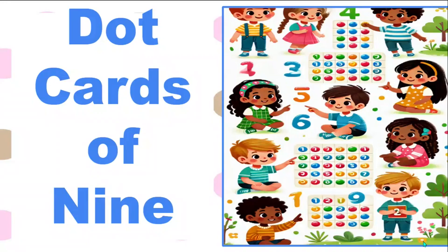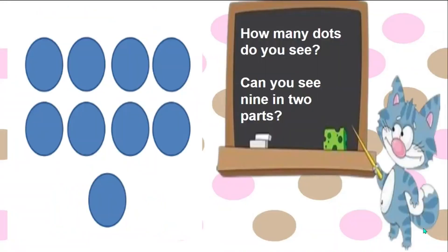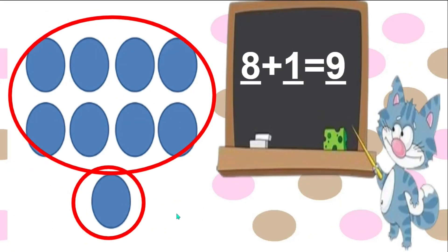This fluency is called Dot Cards of 9. How many dots do you see on my dot card? Can you see it in two parts? I saw a part with eight dots and another part with one. Eight plus one is nine.